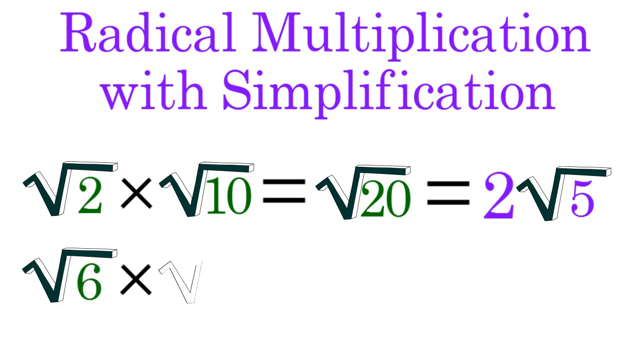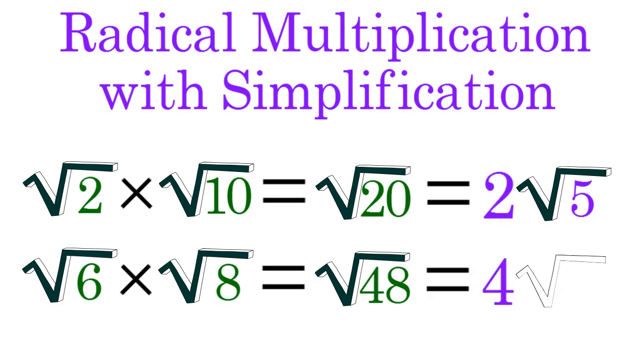As another example, radical 6 times radical 8 equals radical 48, which simplifies to 4 radical 3.